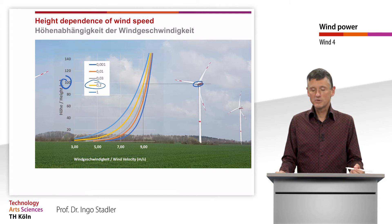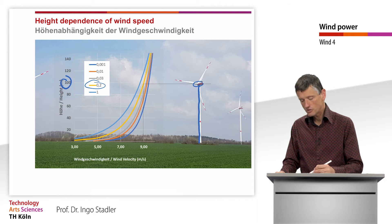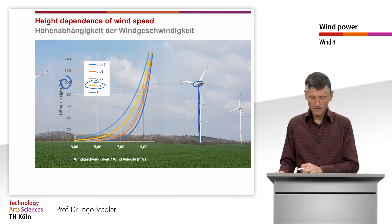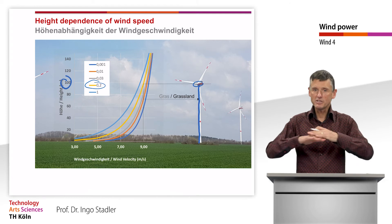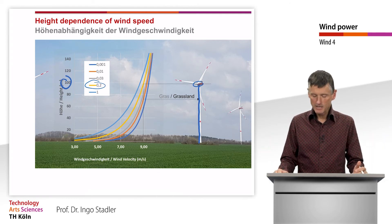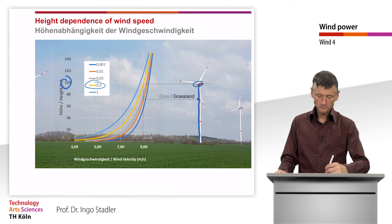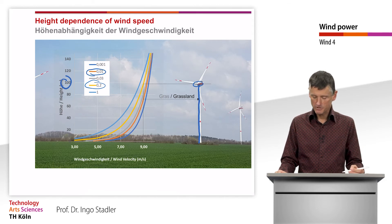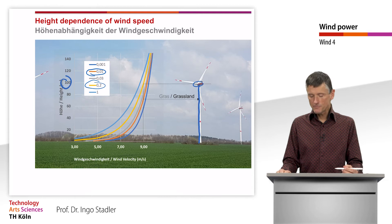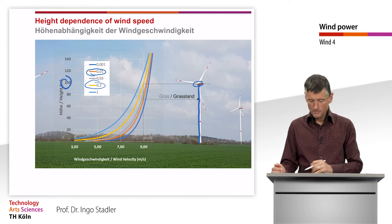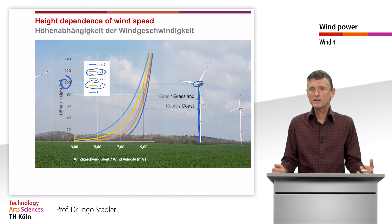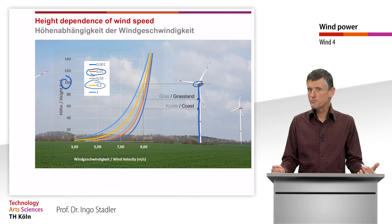If we assumed a different area — for example grasslands, a very even land with only grass — then with a roughness length of only one centimeter, that same 9 meters per second would already be reached at a height of around 70 meters, allowing a much smaller and less costly tower. And if the wind turbine stood at a coastline, we would already have that same wind speed at less than 60 meters height.